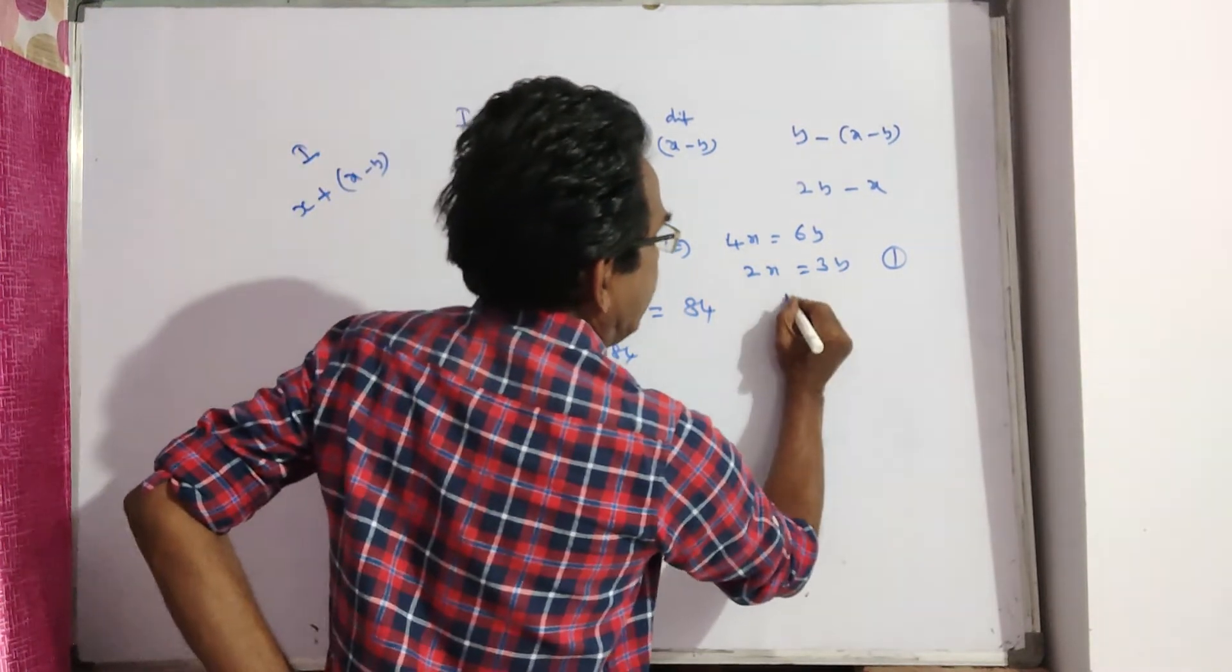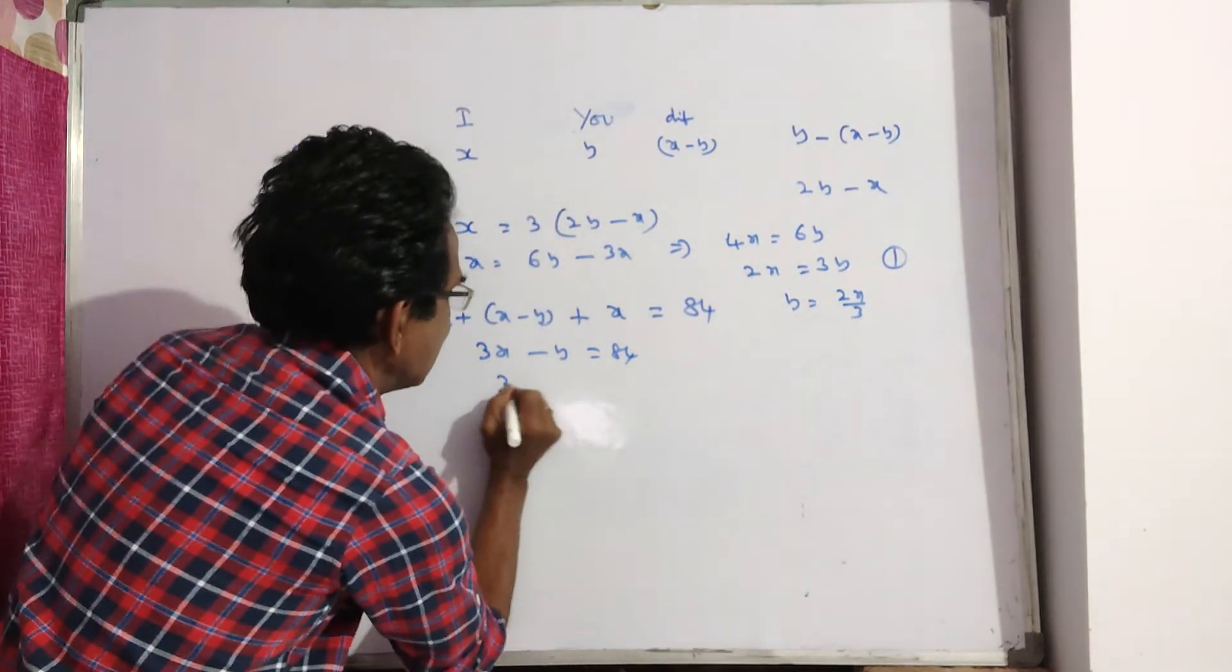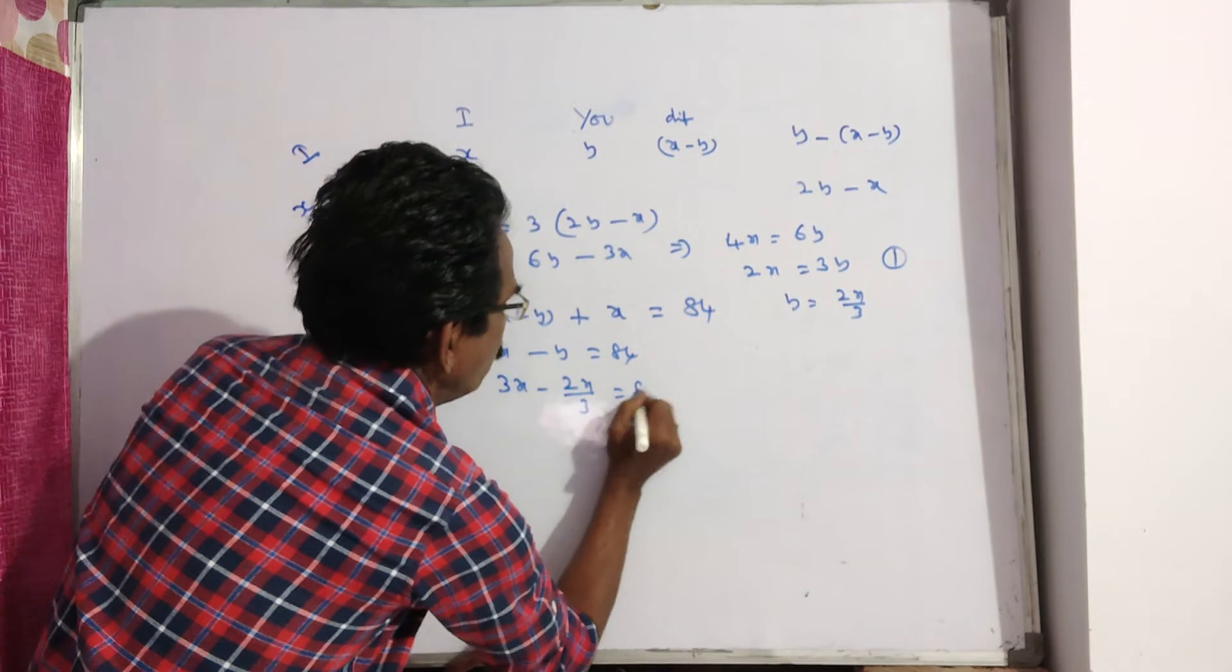Now, here 3Y is equal to 2X, so Y is equal to 2X by 3. So, 3X minus 2X by 3 is equal to 84.